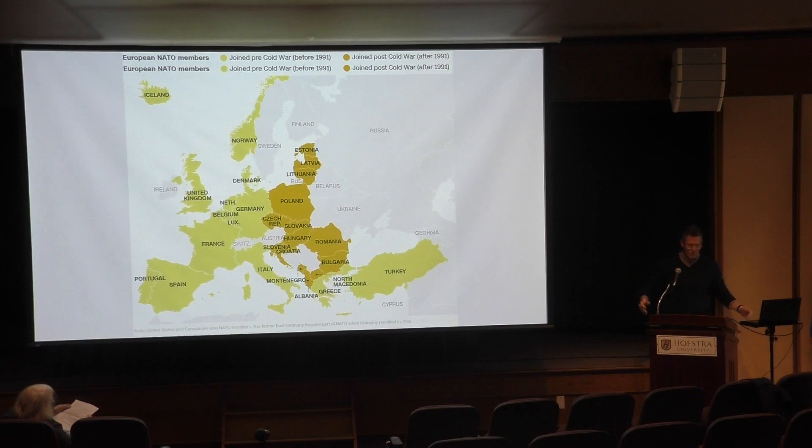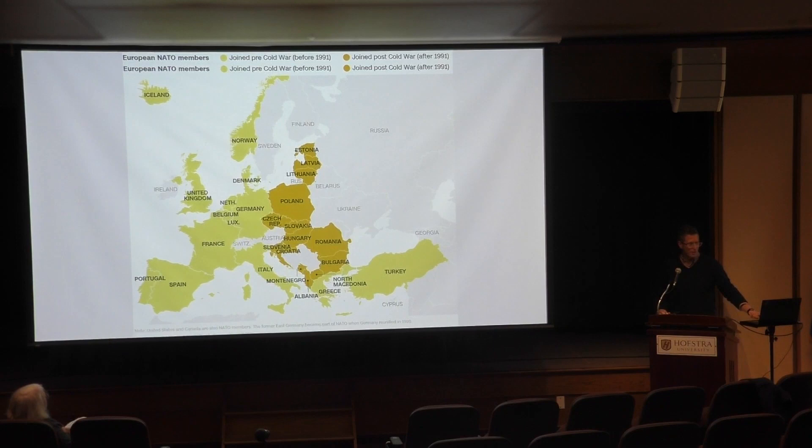NATO membership and NATO expansion after the end of the Cold War — this puts into context Russia in this sense. We have NATO countries here. Of course, the US would be to the left — a much bigger state. NATO, the North Atlantic Treaty Organization — we see this expansion across the map.